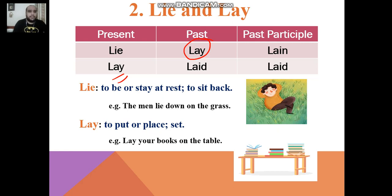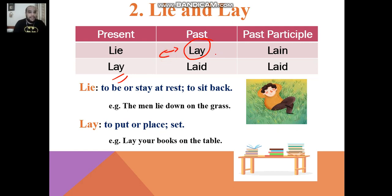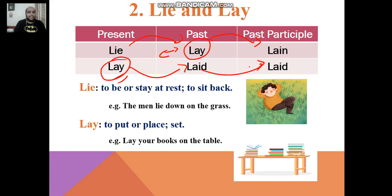Some students ask: how am I going to find the difference between 'lay' and 'lay' — they have the same spelling. Here we have 'lay' in the simple past. For example, 'yesterday I lay on the ground' — that means this 'lay,' the past of 'lie,' resting on the ground. However, 'every day I lay the books on the table at school' — that means this 'lay,' to put. So for 'lie,' the past is 'lay' and the past participle is 'lain,' and for 'lay,' the past is 'laid' and the past participle is 'laid.'